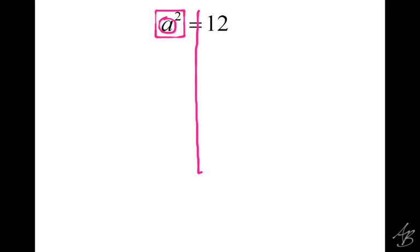Since there's nothing outside the box, what can I do right off the bat? We can take the square root, and that's going to get rid of the square. So we take the square root on the left side to get rid of the square. We take the square root on the right side because whatever we do on one side, we have to do on the other. So the square and the square root cancel, leaving A.